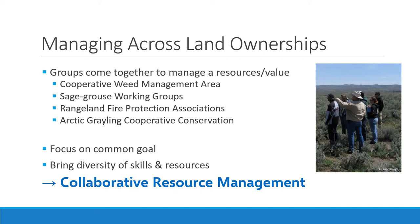Ways to manage across land ownerships include bringing people together around a shared resource. Examples include cooperative weed management areas, sagebrush working groups, and rangeland fire protection associations. There's also a great example from the Big Hole region near Dillon, Montana, where a group developed a CCAA — candidate conservation agreement with assurances — for the Arctic grayling, and they were quite successful. All of these collaboratives focus on a common goal and bring a diversity of skills and resources together. These are all elements of collaborative resource management.